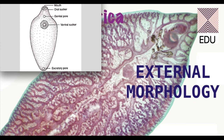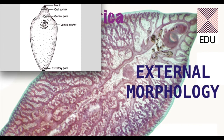The body of Fasciola Hepatica has a cuticular membrane on the outside called the tegument, which is the outermost layer. This tegument protects Fasciola Hepatica from the internal juices of the host. The tegument also has backwardly directed needle-like structures called spinules, which help in anchorage and locomotion alongside the ventral sucker.